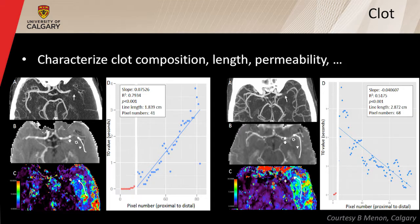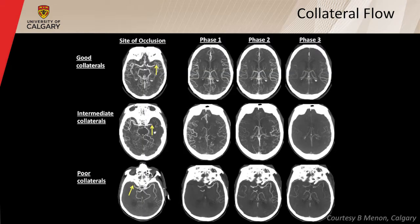We've done interesting work at our institution characterizing the clot — its length and permeability — by looking at the transit and arrival of contrast agent at various lengths across the clot. A positive slope indicates contrast arriving from a direct path; a negative slope suggests it's coming from a collateral path. This is very important information when managing these patients. We can also use the multi-phase approach to establish the degree of collateral flow, comparing three different patients with good, intermediate, and poor collaterals across the three CT phases.